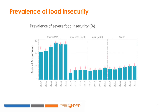The food insecurity indicator is based on the Food Insecurity Experience Scale Survey module. The questions refer to self-reported food-related behaviours and experiences associated with increasing difficulties in accessing food due to resource constraints. During the last 12 months, because of lack of money or other resources: Were you worried you would not have enough food? Were you unable to eat healthy and nutritious food? Did you eat only a few kinds of foods? Did you have to skip a meal? Did you eat less than you thought you should? Did your household run out of food? Were you hungry but did not eat? And did you go without eating for a whole day?